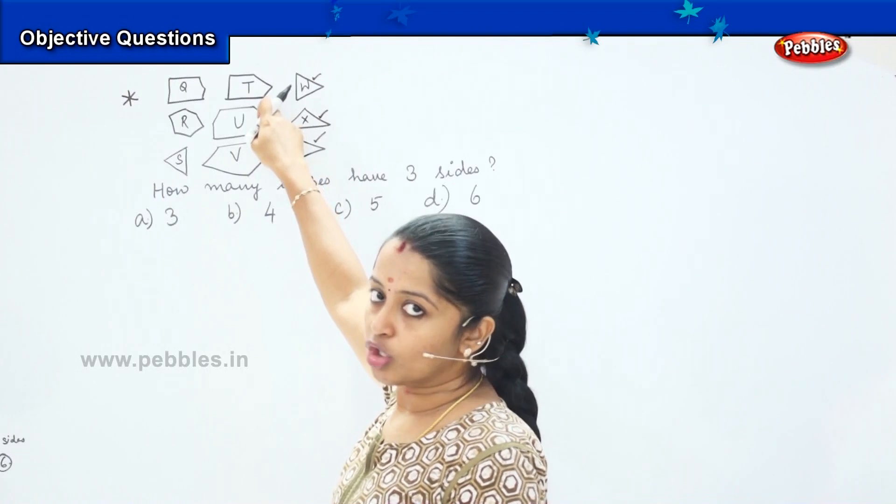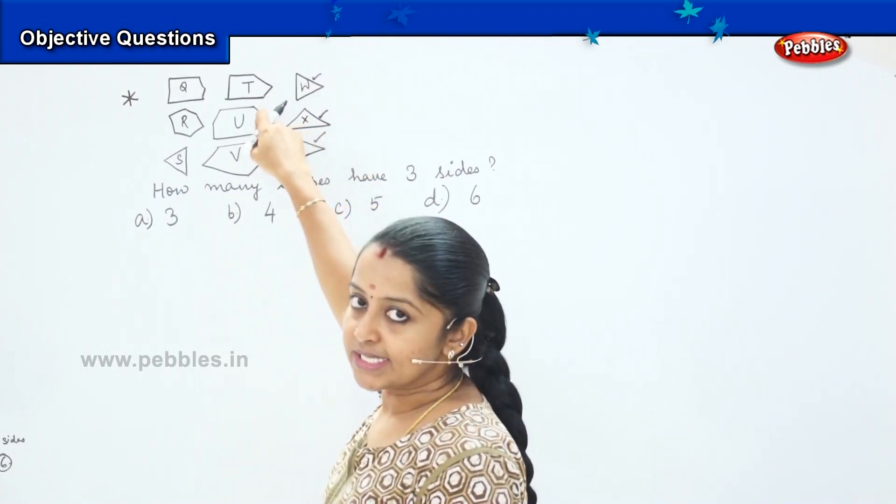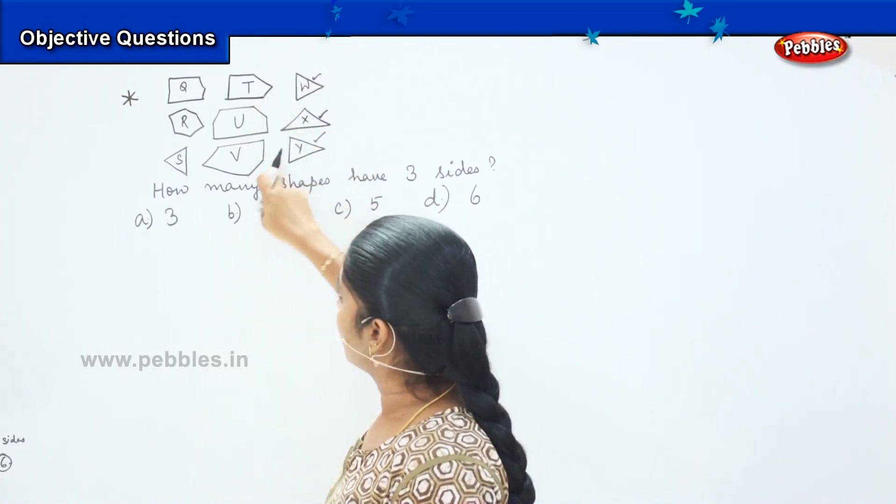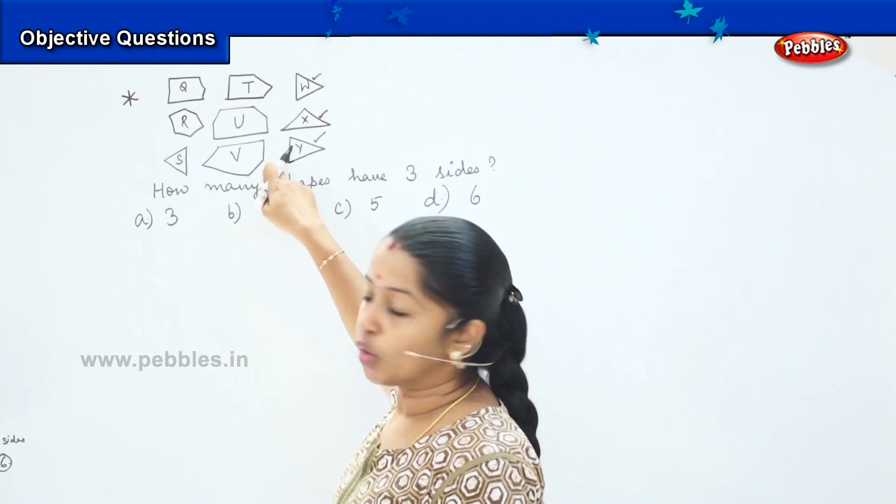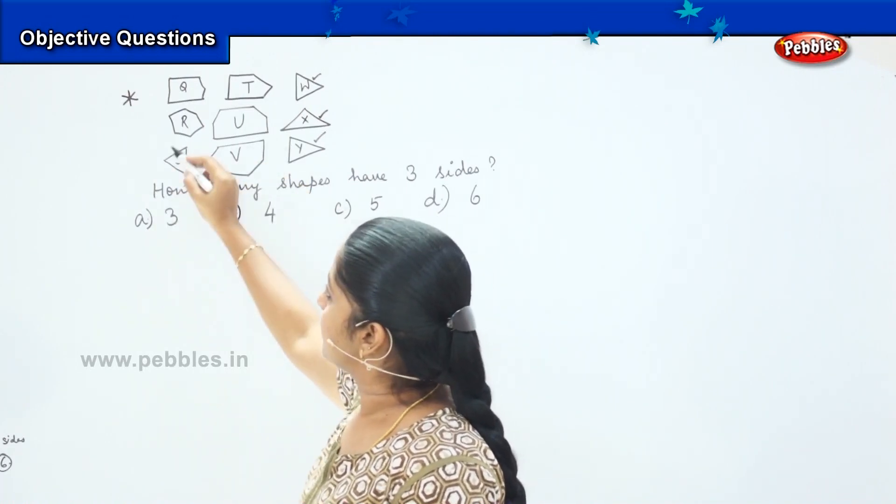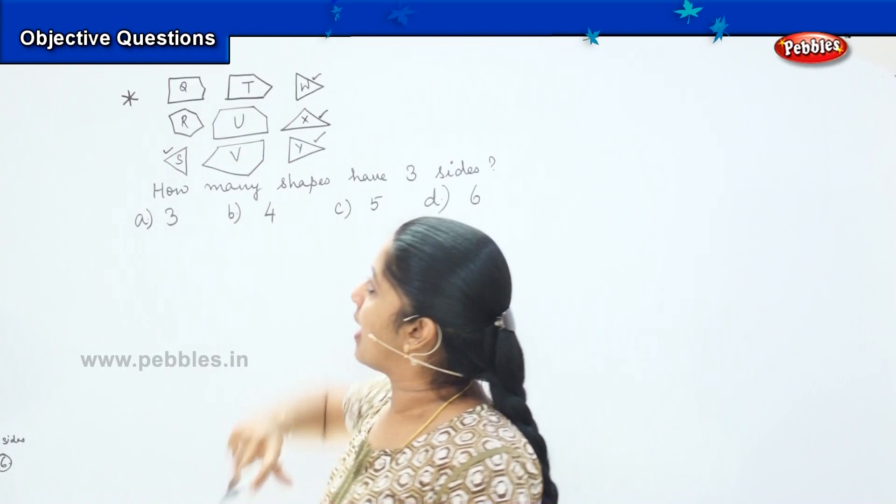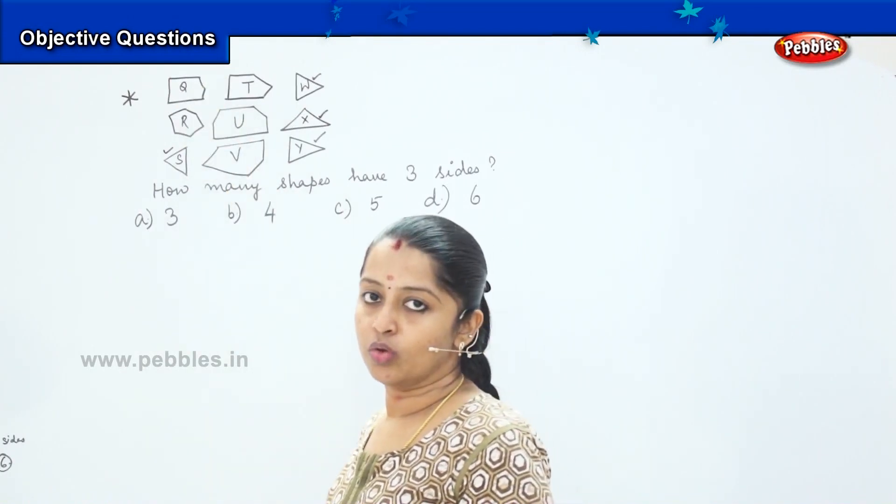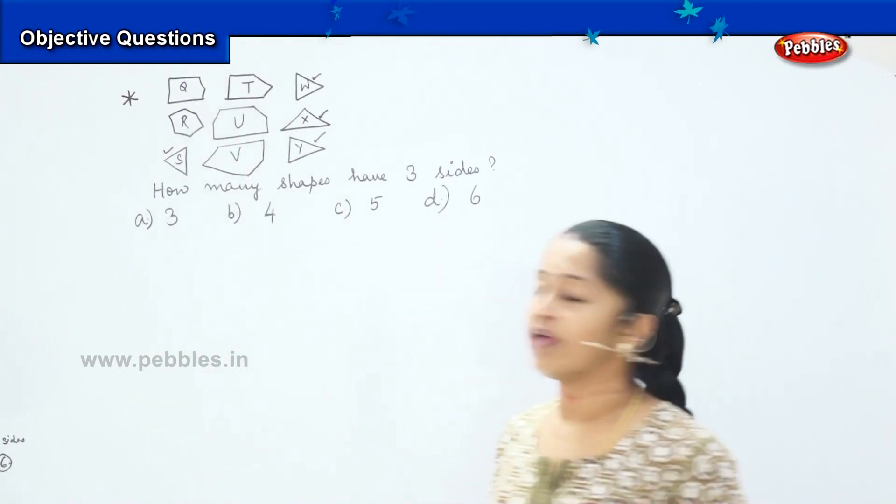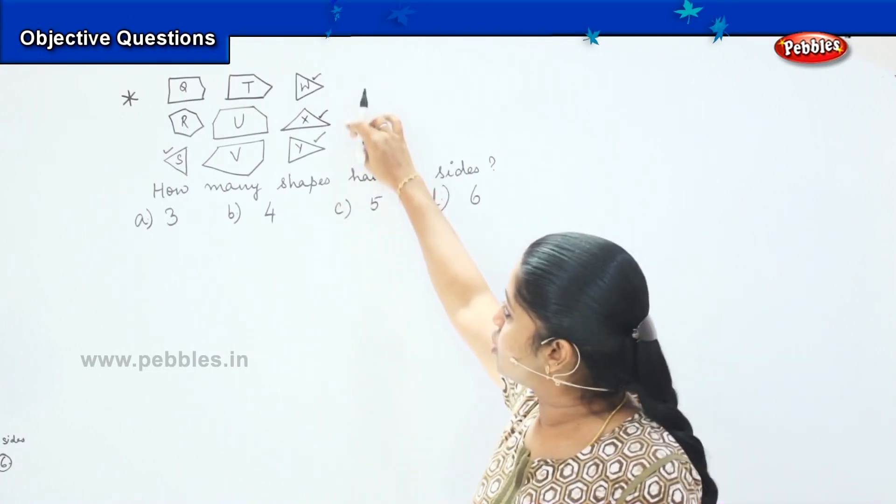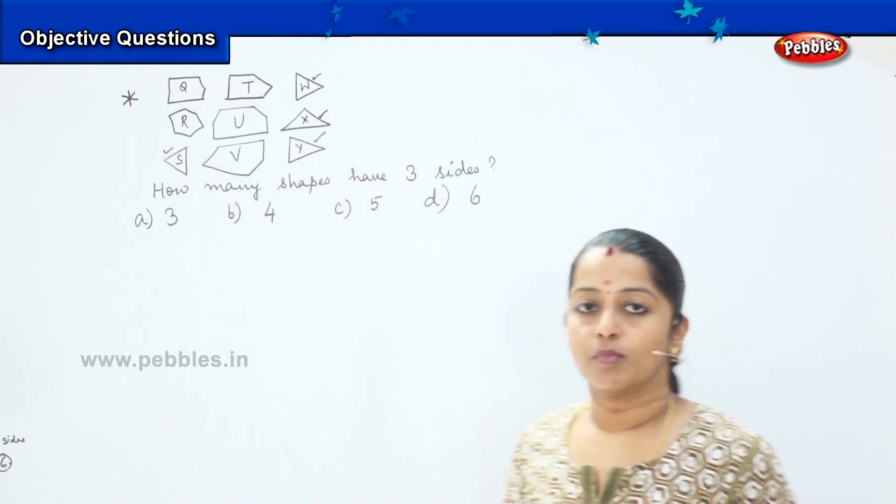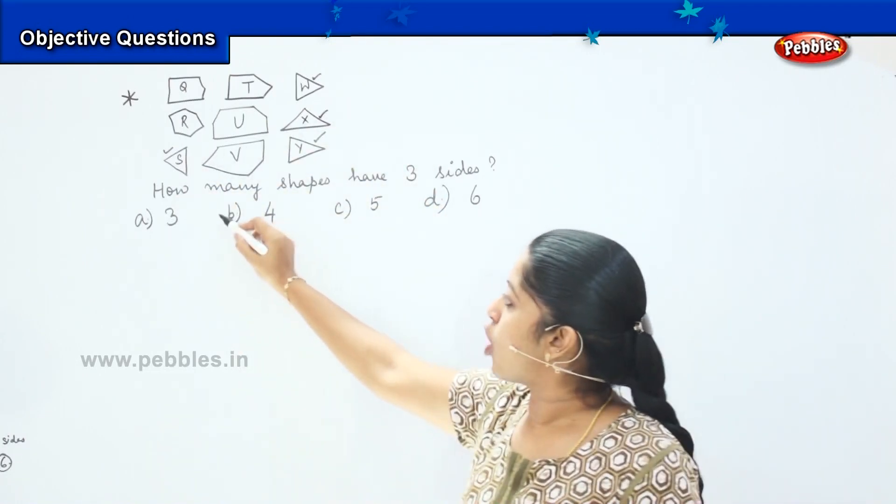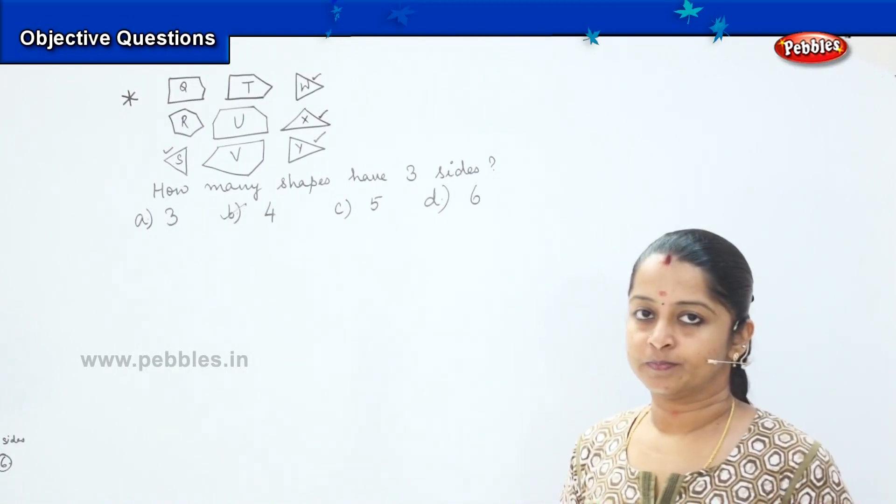Does it have three sides? No. Does it have three sides? No. What about the last one? No. How about this one? Yes. How about R and Q? No. So, how many of the shapes are having three sides? It's one, two, three, and four. So, my right option is option B.